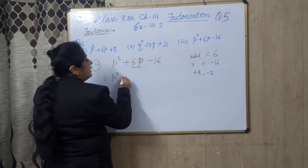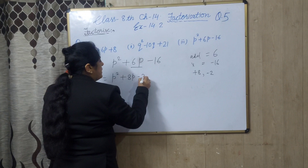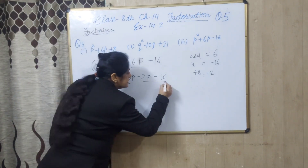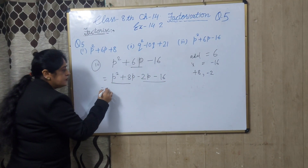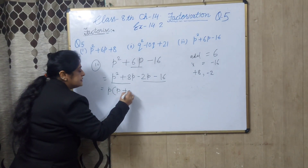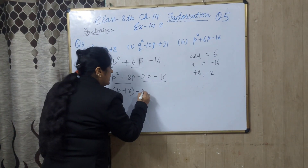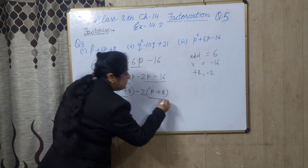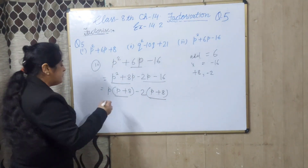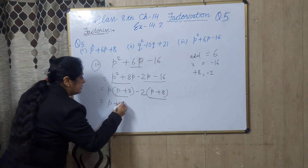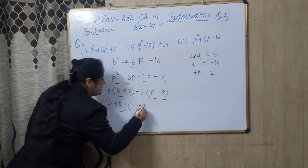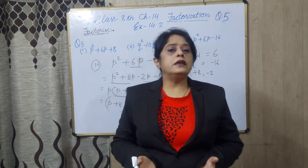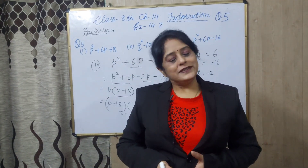So write it as p squared plus 8p minus 2p minus 16. Take this as one pair and this as another pair. In the first pair take p as common, giving p plus 8. Here take minus 2 as common, giving p plus 8. Now p plus 8 appears in both, so take p plus 8 as common. Inside you will get p minus 2. These are the two factors. You should practice some more examples. I hope you understood. Thank you.